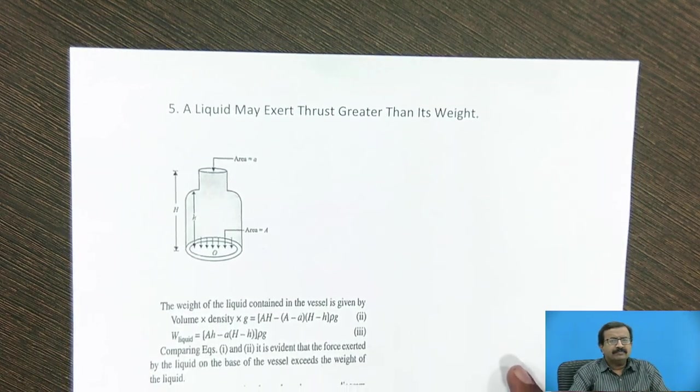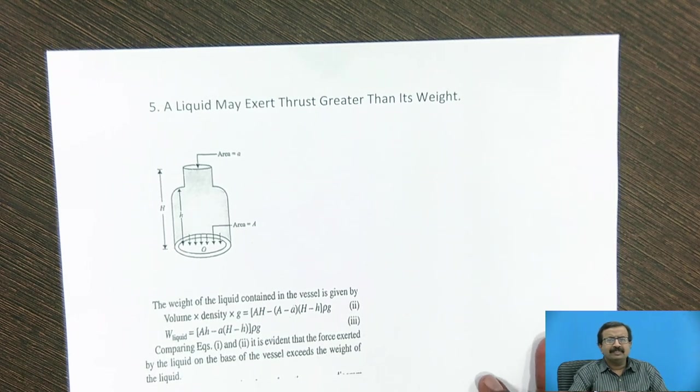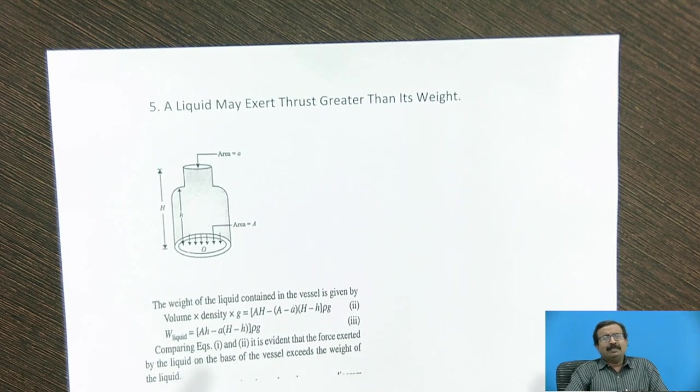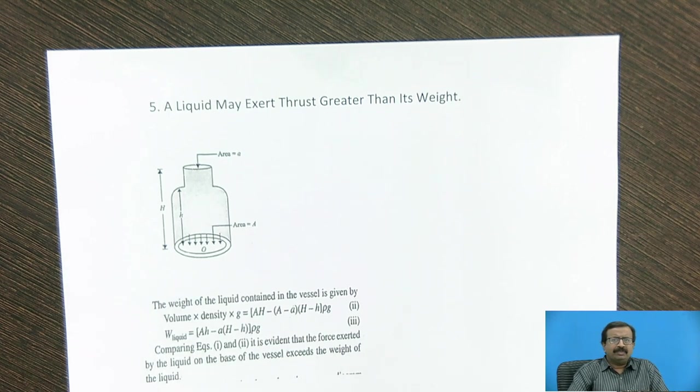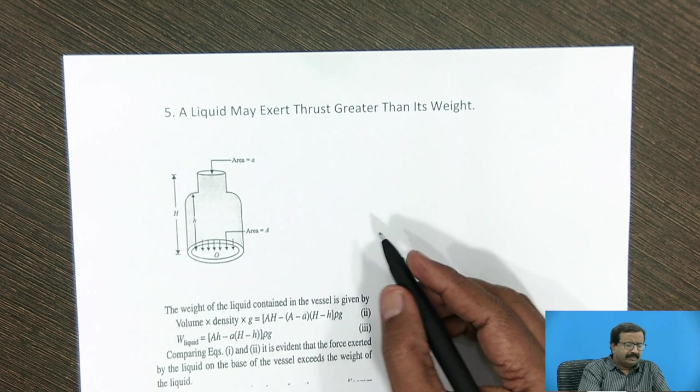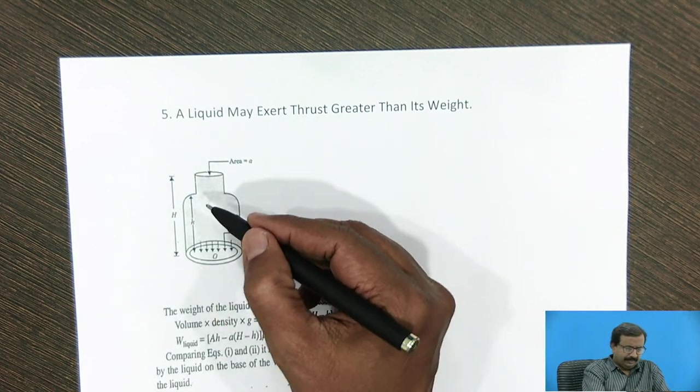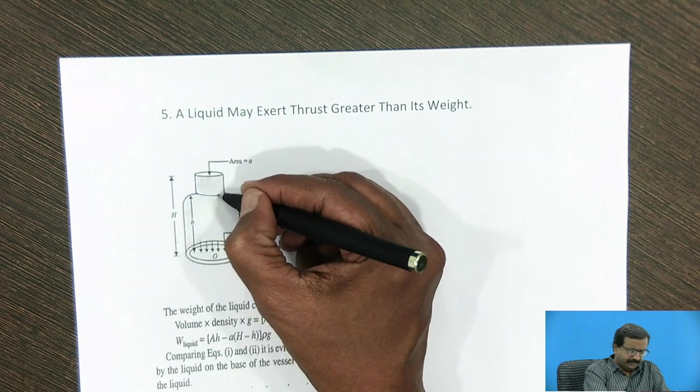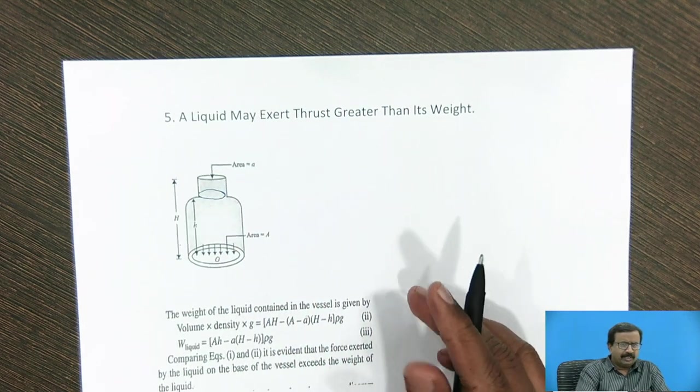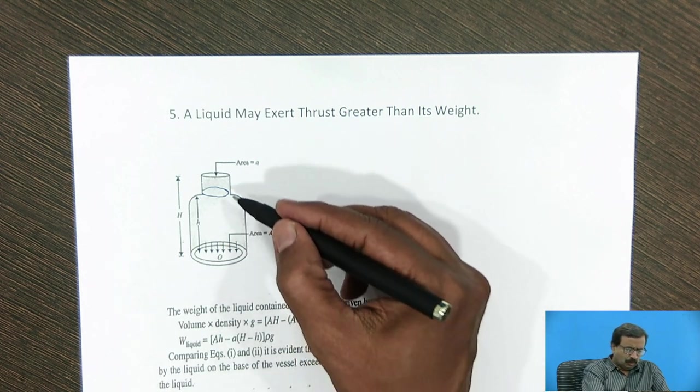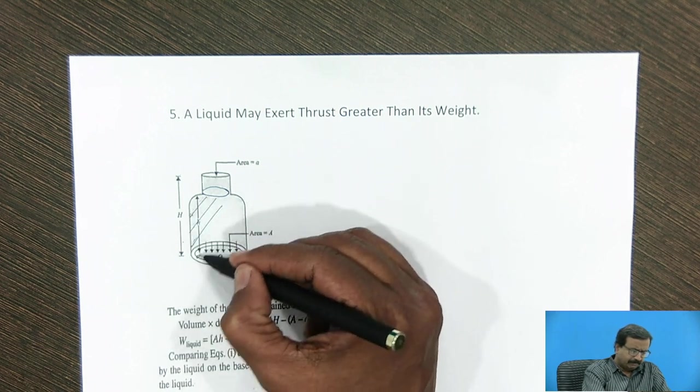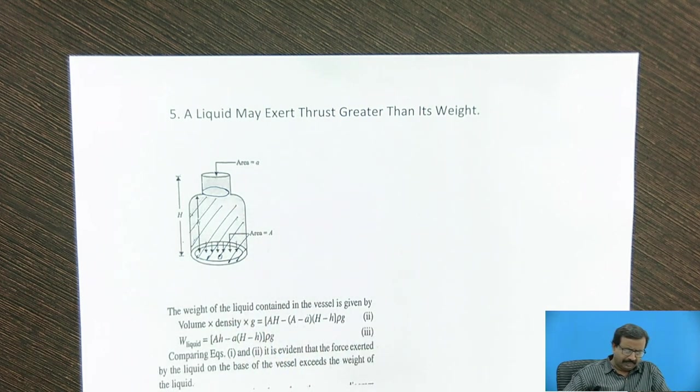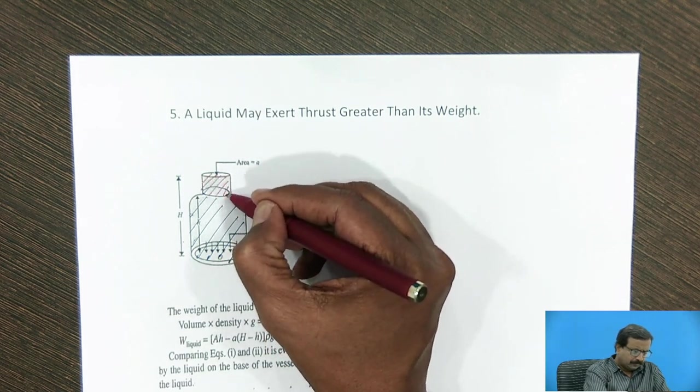Now next important point is, a liquid may exert thrust greater than its weight. Now this is a very important thing and a paradoxical concept, and students find it difficult when they want to give an answer. Now you can see here, I have given you the container. That container is such that its height is h, and the area is restricted here at the bottom, at the top. Then what happens, if I see, the total weight of the liquid, total weight of the liquid is, weight of the liquid present in this part, plus weight of the liquid present in this part.